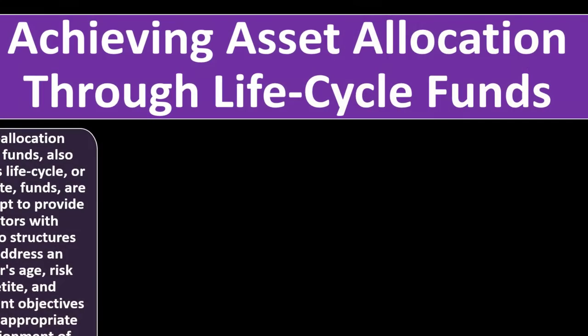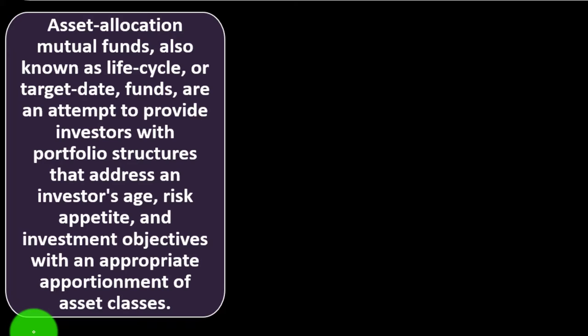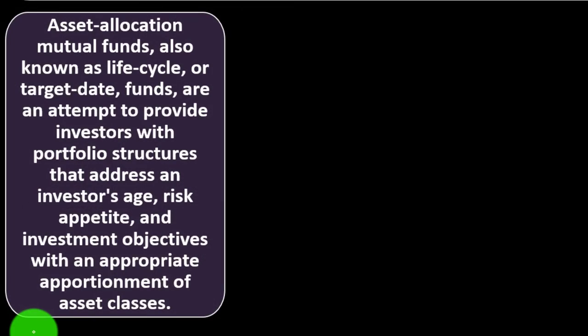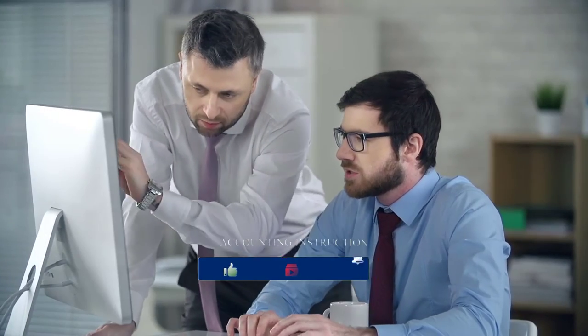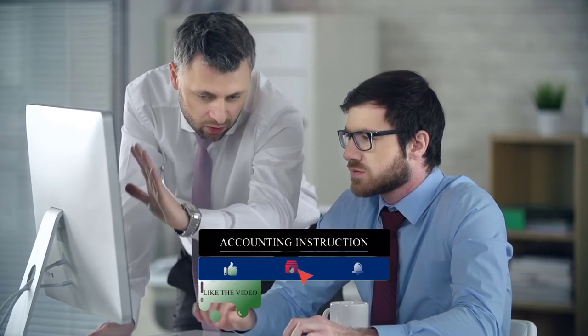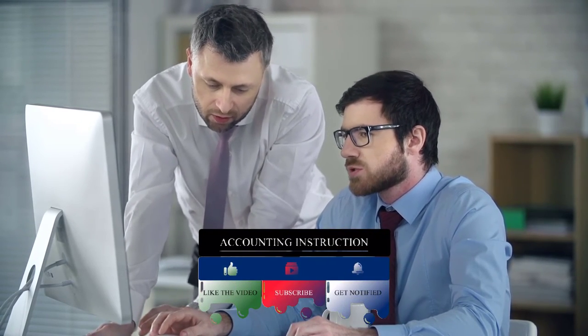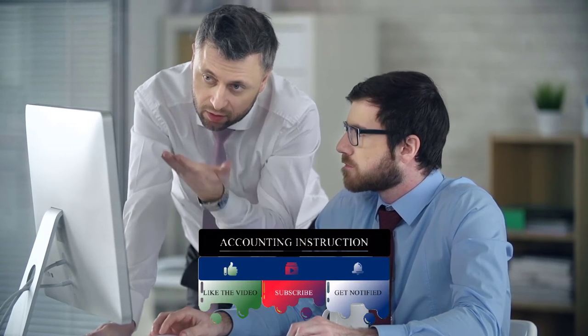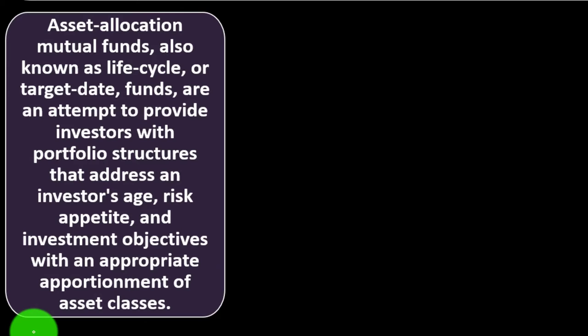Asset allocation mutual funds, also known as life cycle or target date funds, attempt to provide investors with portfolio structures that address an investor's age, risk appetite, and investment objectives with an appropriate apportionment of asset classes. You can pick one fund that does this asset allocation method, getting a good amount of diversification in a single choice. Alternatively, you can do your own allocation and pick different mutual funds.